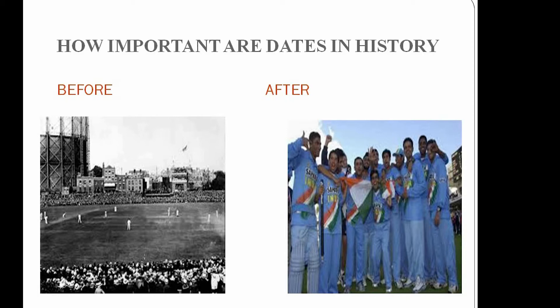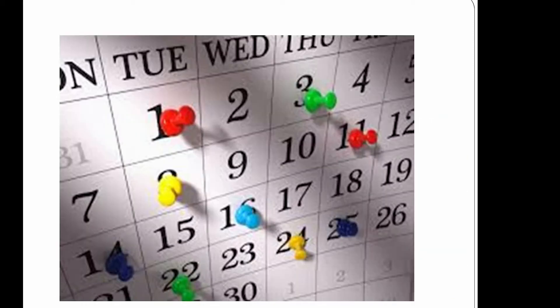When looking at old photographs of the sport, we can spot many significant changes since its inception — 'inception' means the establishment or starting point of an institution or activity. The sport has attained its present form gradually over time. This tells us that cricket has a history of evolution. Studying history is not only about memorizing dates but also finding out how things have changed and evolved over time, by comparing the past with the present and being inquisitive — which means curious — about our surroundings.